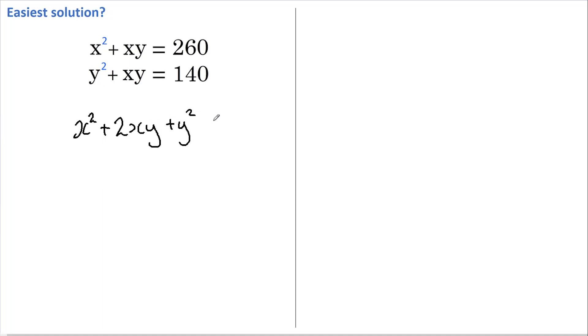Now this on the left-hand side you'll probably recognize as the expansion of (x + y)², which still equals 400.